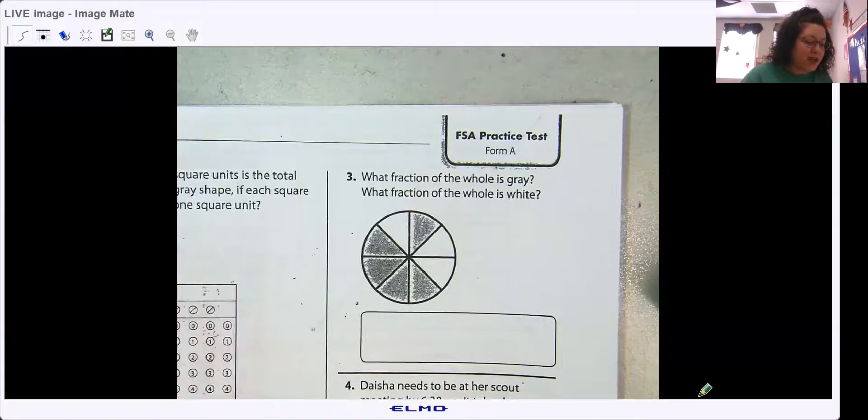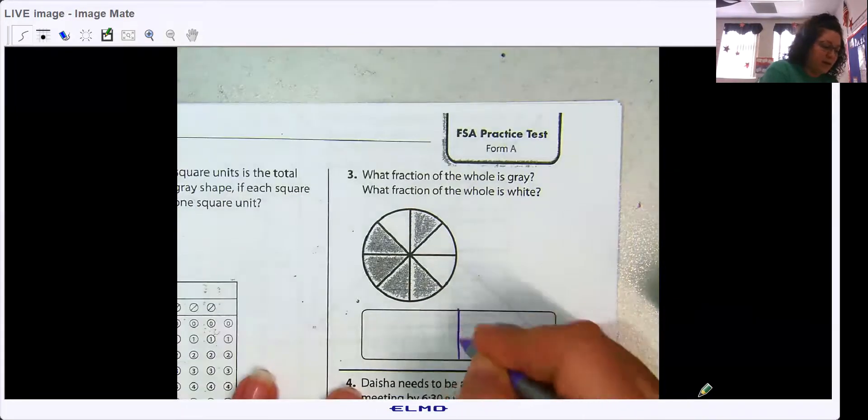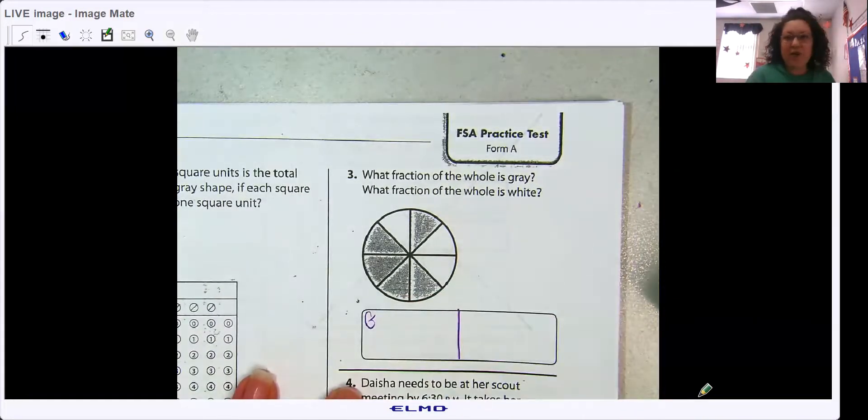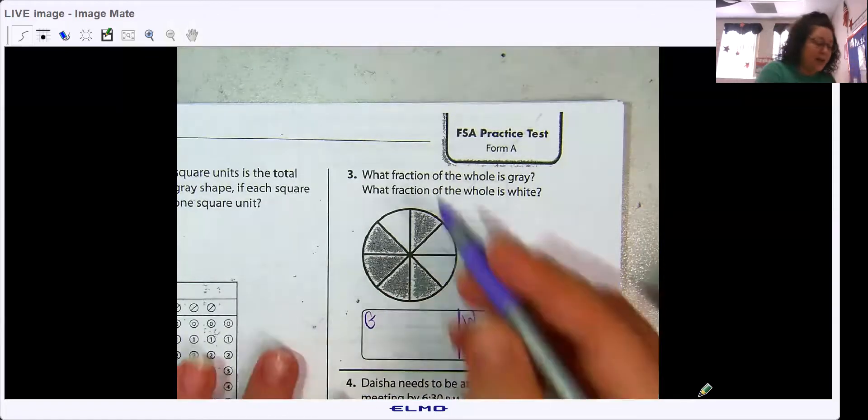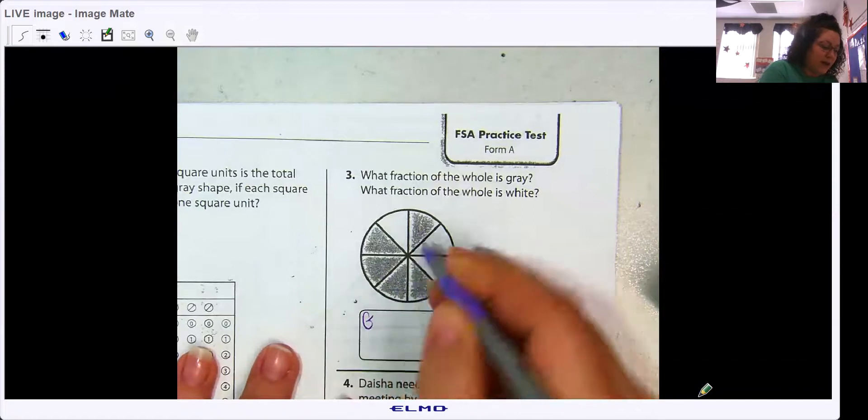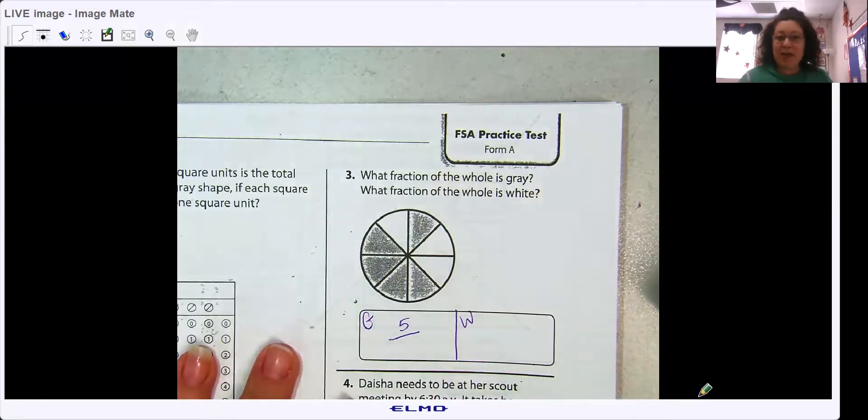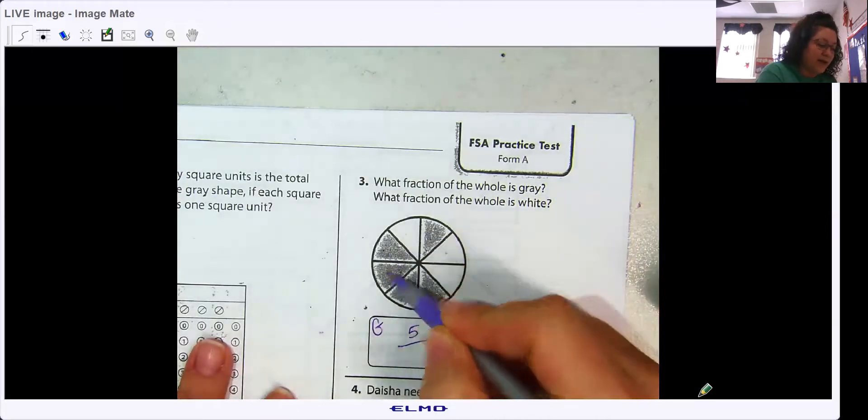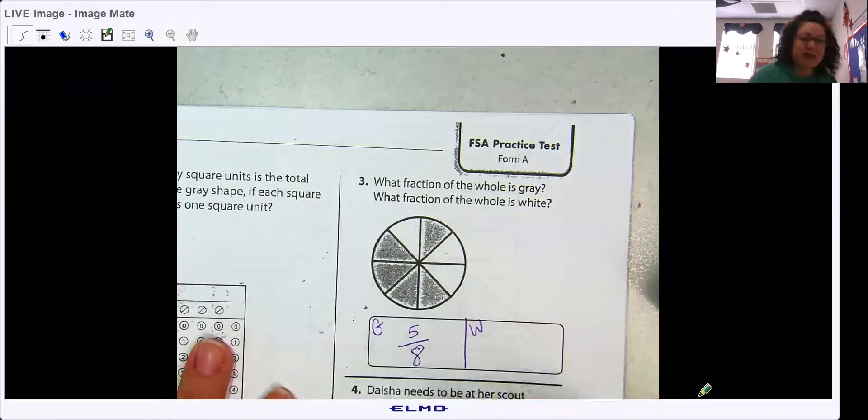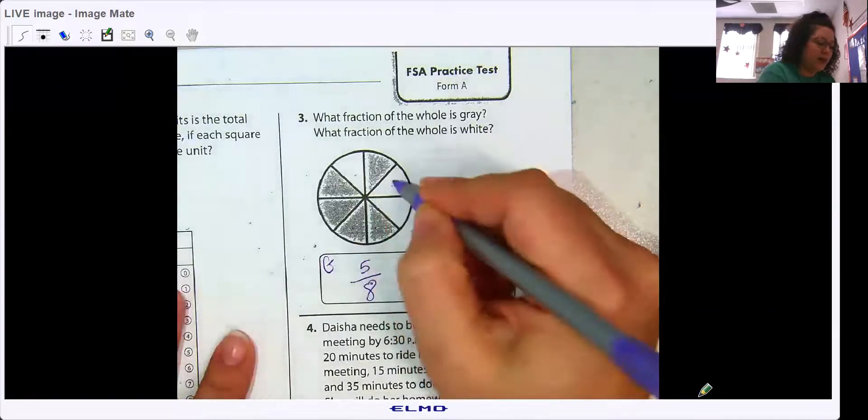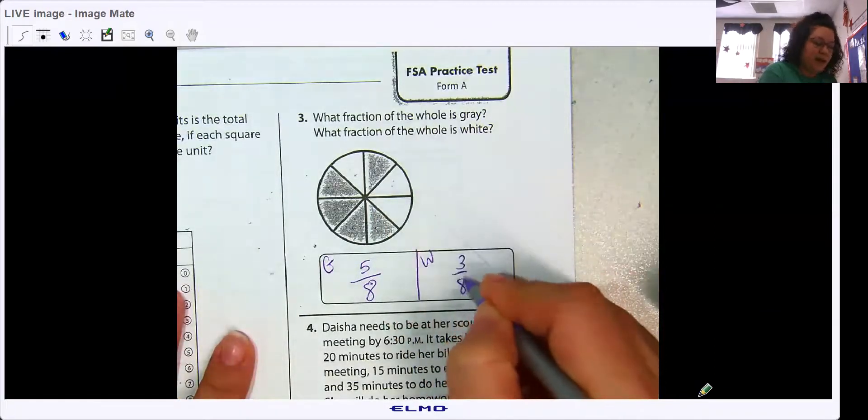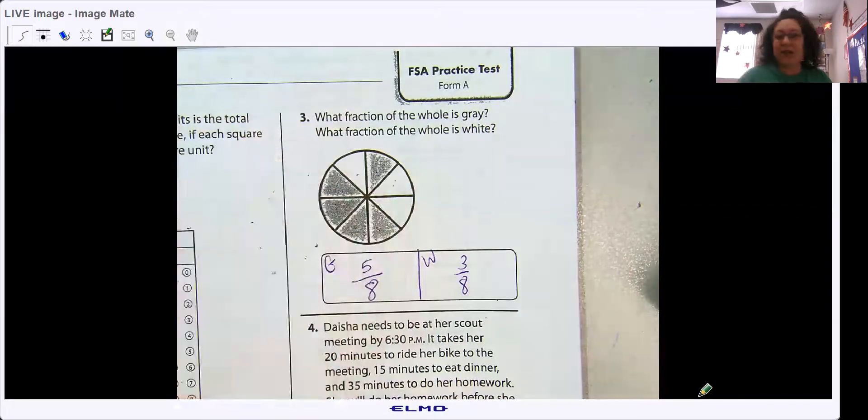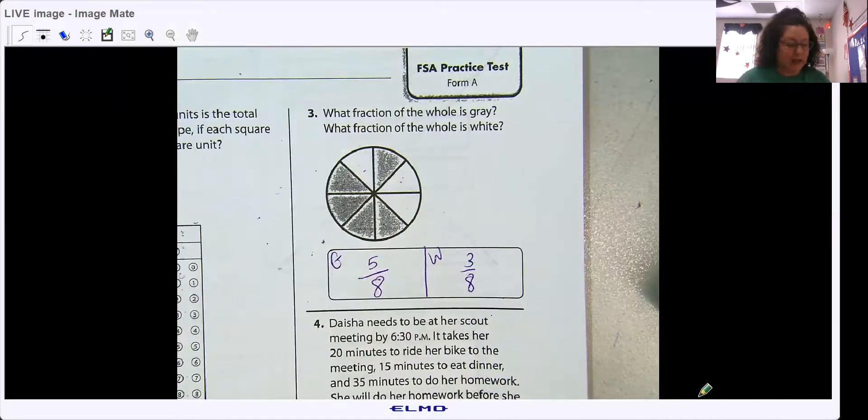Okay? Which fraction of the whole is gray? Which fraction of the whole is white? So before we do that, gray pieces, 1, 2, 3, 4, there's 5. And remember, our denominator is how many pieces are all together? 1, 2, 3, 4, 5, 6, 7, 8. 5 eighths is gray. 1, 2, 3 eighths, because there's 8 altogether, is white. That should have been pretty easy.